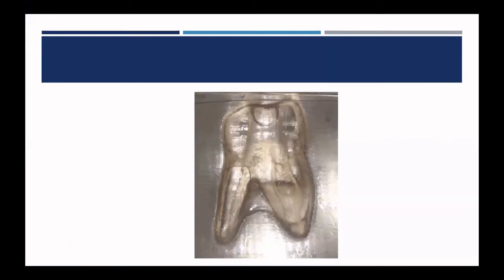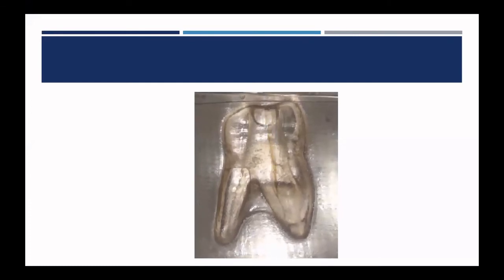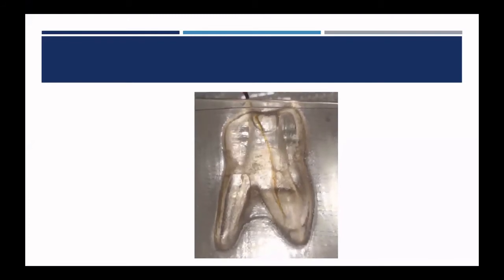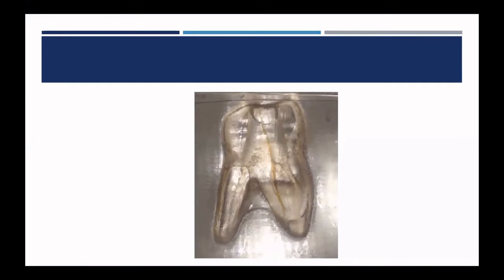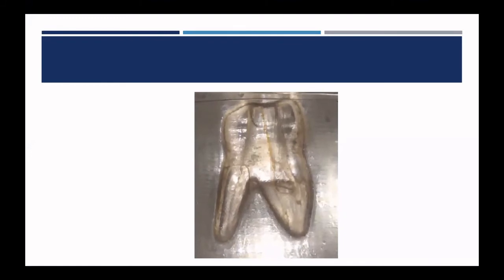Let's look at a little in vitro study — a replica printed by Dr. Buchanan. We're going to look at the cavitation and fluid dynamics of the laser. We're looking at the MB root — the fiber is in the MB2 — and we're going to activate it. You're going to see the fluid dynamics occurring as we withdraw the laser tip. There's a little anastomosis between the MB1 and MB2 — if you look closely, you'll see cavitation bubbles crossing over and cleaning out the isthmus and anastomosis between the canals.